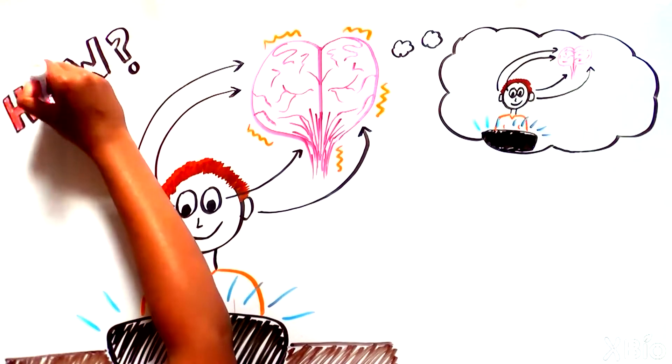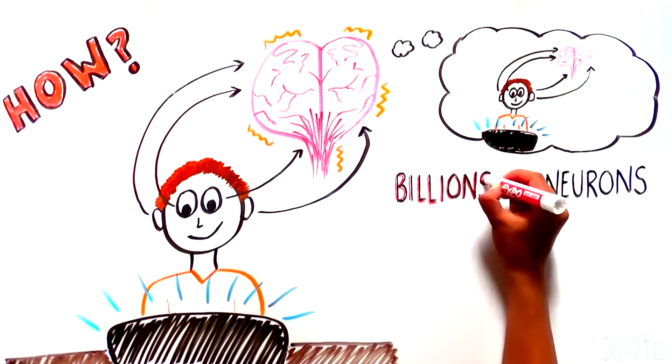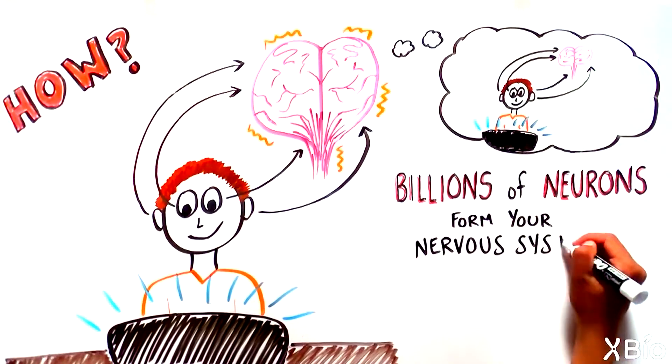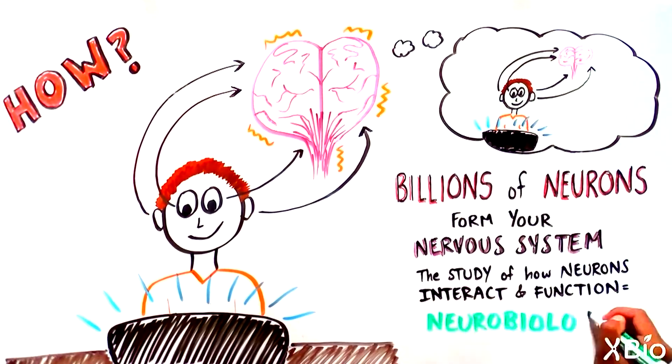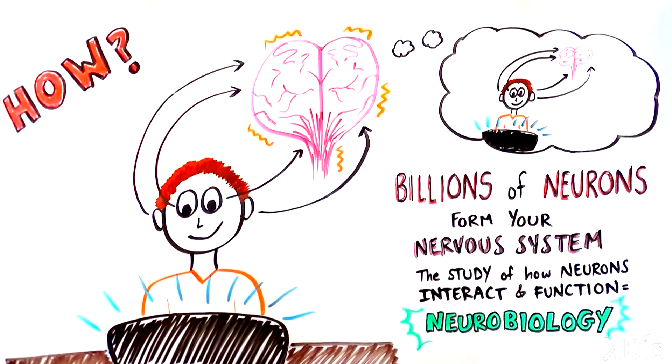The answer is through the action of billions of cells called neurons that work together to form your nervous system. The study of how neurons function and interact so we can see, hear, smell, taste, feel, think and move is called neurobiology.